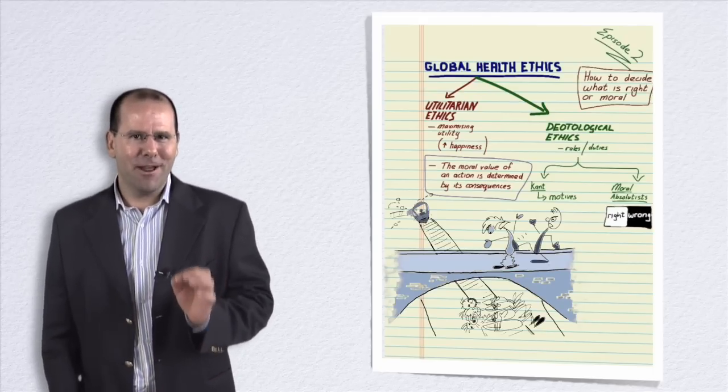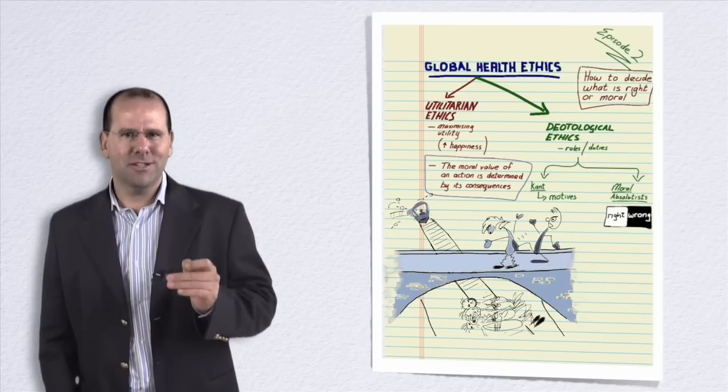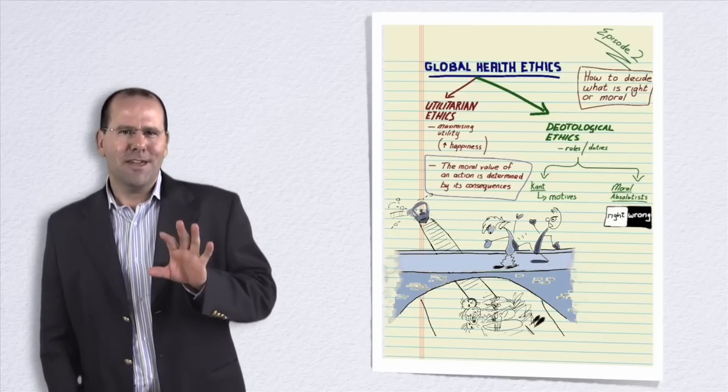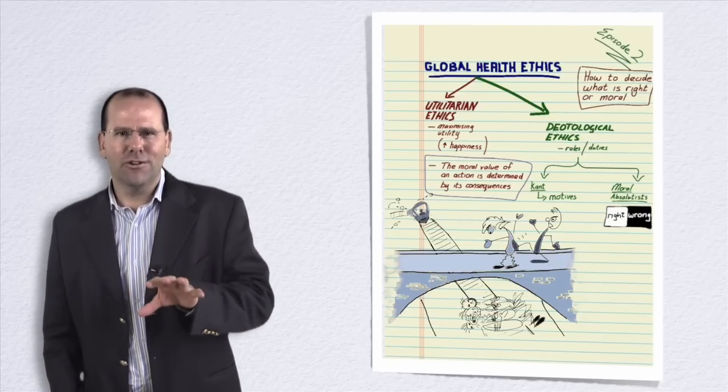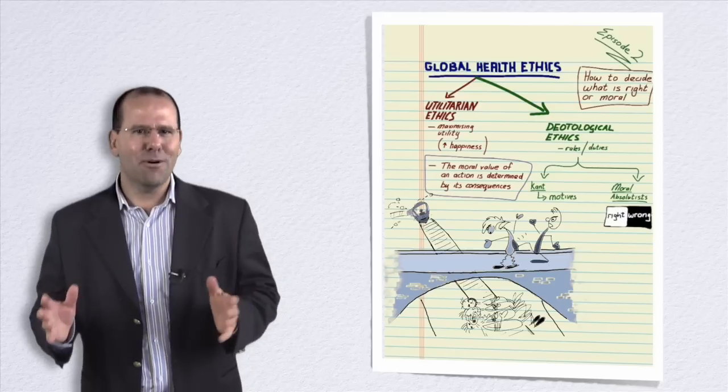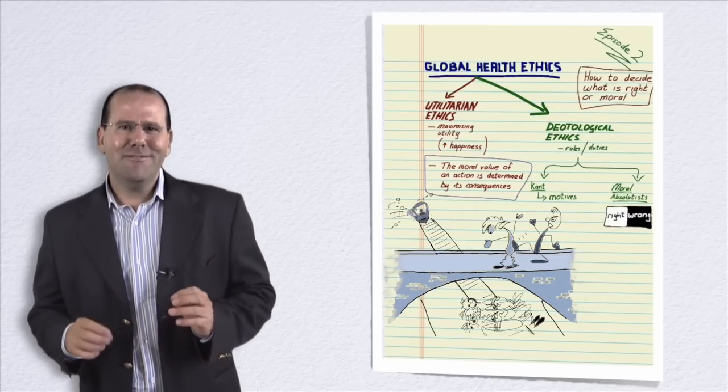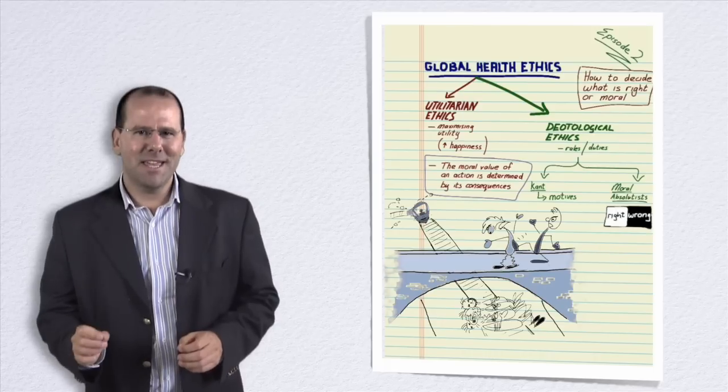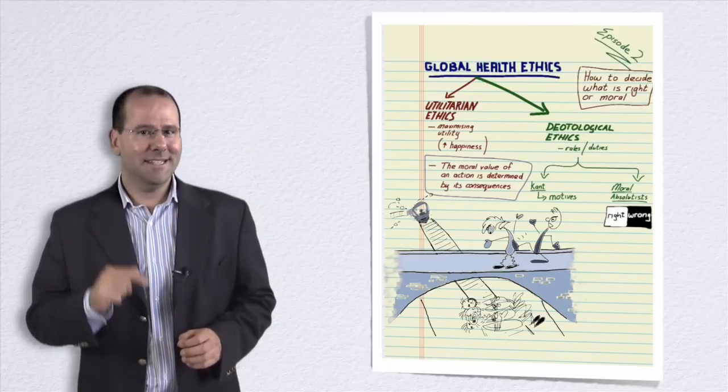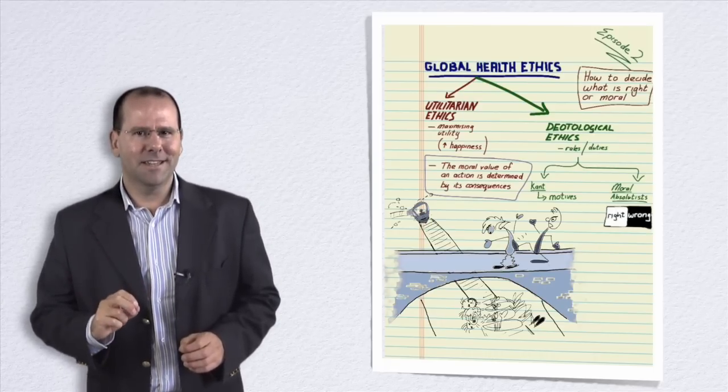Interestingly, functional MRI brain scans of individuals faced with these trolley experiments show that variation in the scenario causes completely different parts of the brain to be involved with decision making. And so even though a completely different decision gets made, people always seem to believe that their latest decision is the morally correct thing.